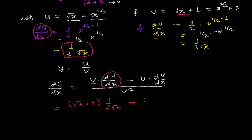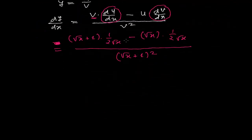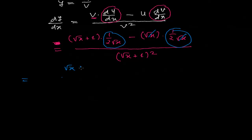...which is 1 by 2 root x, minus u, which is root x, times dv/dx, which is 1 by 2 root x, all over v squared, which is root x plus 1 whole square. Now we can take 1 by 2 root x as a common factor from the numerator, leaving root x plus 1 times 1 by 2 written separately.